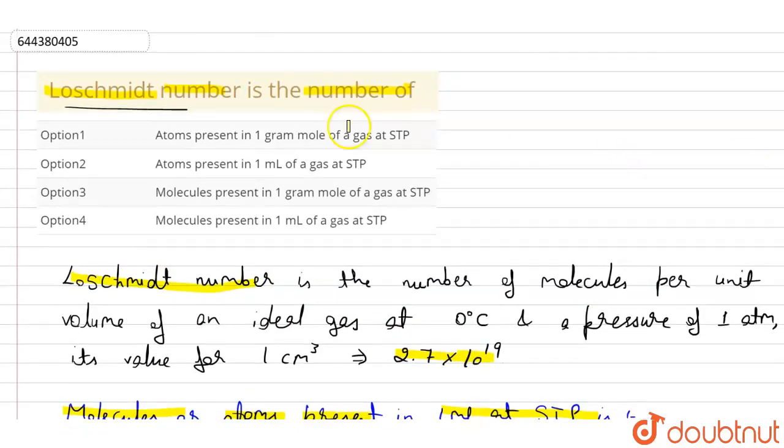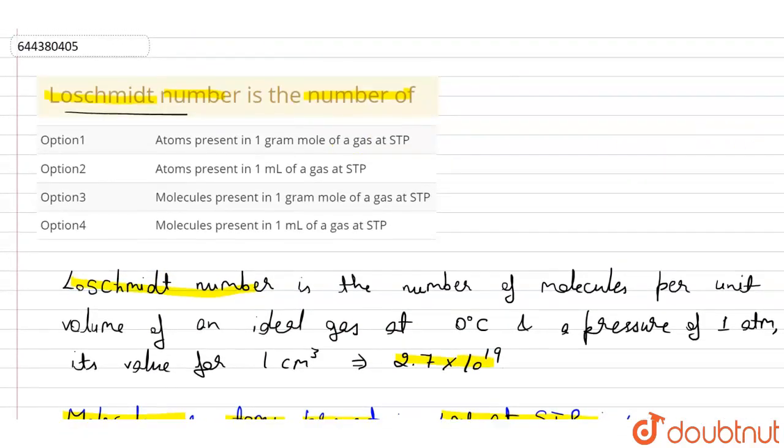So I will mark the options. Option first, atoms present in one gram mole of a gas at STP, is wrong. Atoms present in one ml - so yes, as we discussed here, it is the right option. Third option, molecules present in one gram mole, is wrong. Molecules present in one ml - yes, we discussed here. Therefore, the correct options are option two and option fourth, that is, Loschmidt number is the number of atoms present in one ml of a gas at STP and molecules present in one ml of a gas at STP.